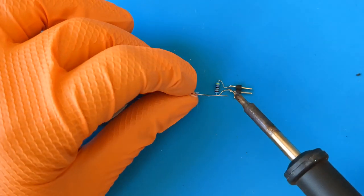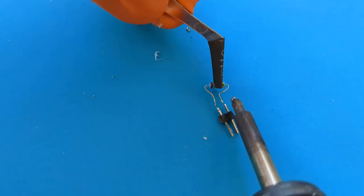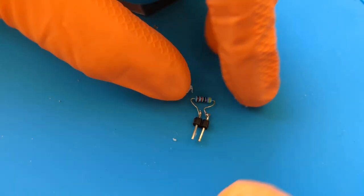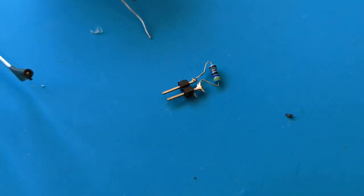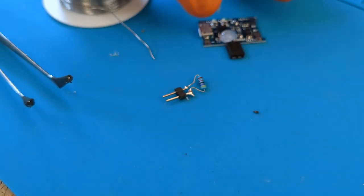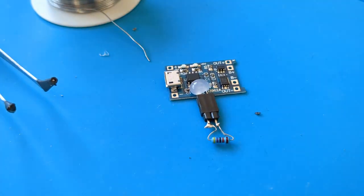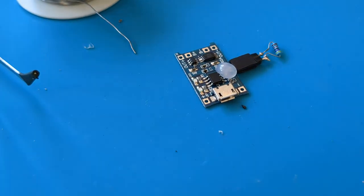Now we solder the resistor to a male two pin connector. I used a 47 kilohm resistor to achieve a safe charging current for my battery. By using different resistors, you can achieve different charging currents. You can find all the information on the TP4056 data sheet.